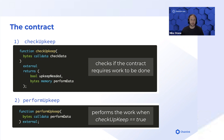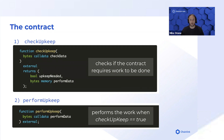You can include really complex logic that ultimately decides whether this automation should occur. The idea is to do as much work as possible in checkUpkeep, because you can use performData to pass information between checkUpkeep and performUpkeep so that you're using as little gas as possible within the performUpkeep function.